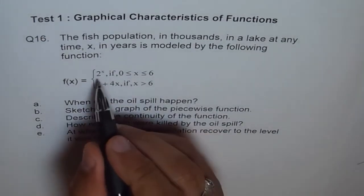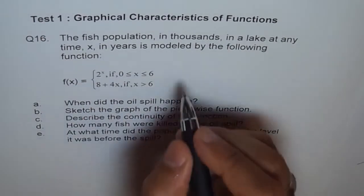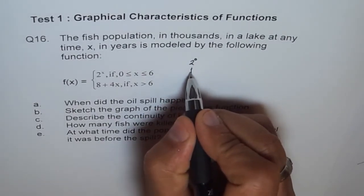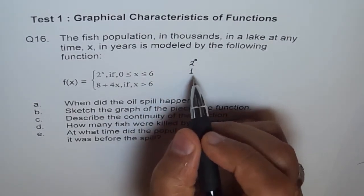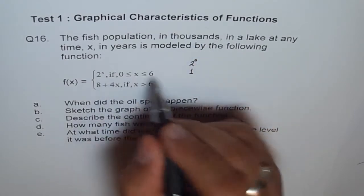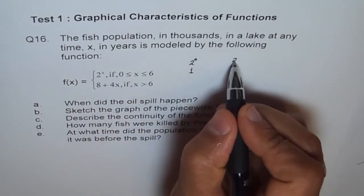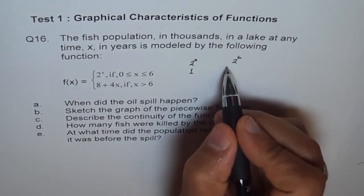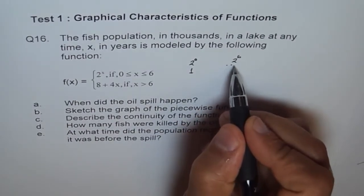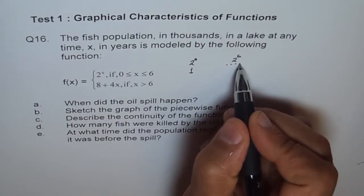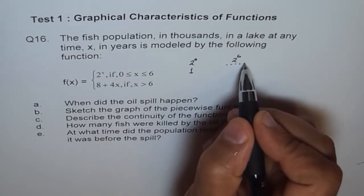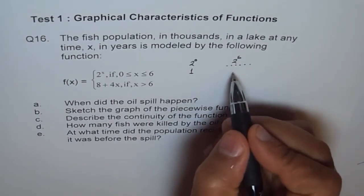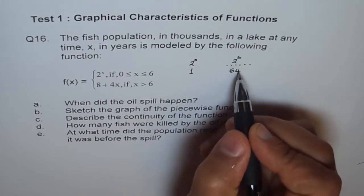At the time when it was 0, it is 2 to the power of 0, which is basically 1, meaning 1,000. After 6 years, it is 2 to the power of 6. So 2 to the power of 6 is 2 times 2 is 4, 4 times 2 is 8, 8 times 2 is 16, 16 times 2 is 32, 32 times 2 is 64. Or you can use the calculator. So we get 64, that means 64,000.